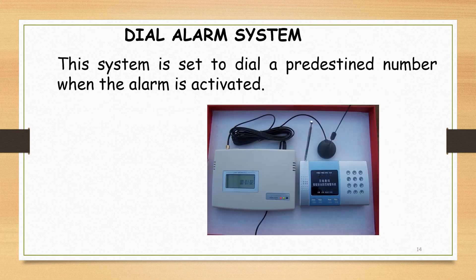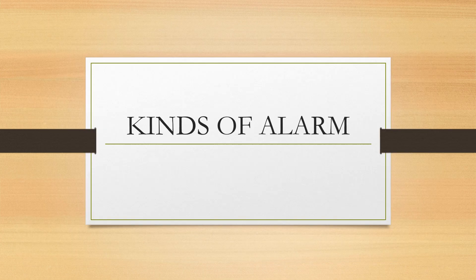But such a call is purely a matter of chance. Dial alarm system — this system is set to dial a predetermined number when the alarm is activated. The number selected might be the police, the subscriber's home number, or both. When the phone is answered, a recording states that an intrusion is in progress at the location.